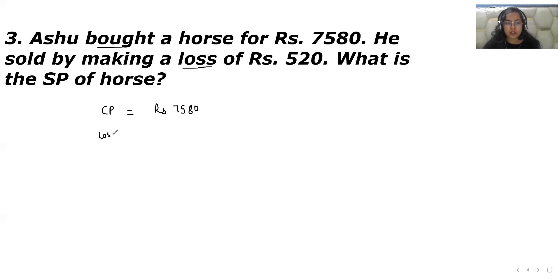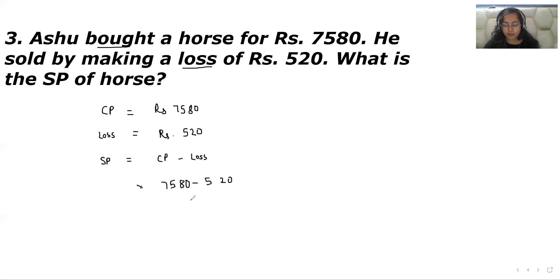The cost price is Rs 7,580 and the loss is Rs 520. The formula for selling price when a loss has occurred is cost price minus loss. So selling price equals Rs 7,580 minus Rs 520. Calculating: 0 minus 0 is 0, 8 minus 2 is 6, 5 minus 5 is 0, leaving 7. So the selling price is Rs 7,060.